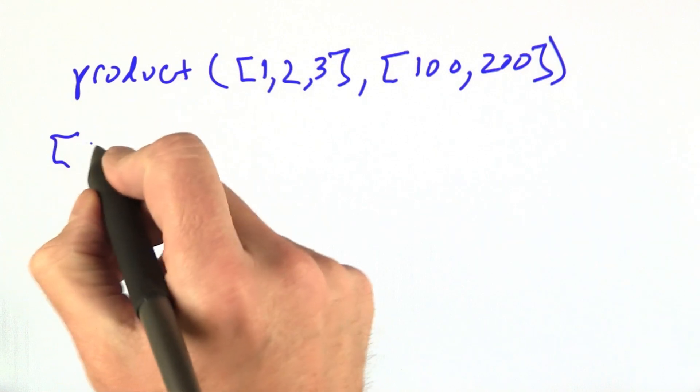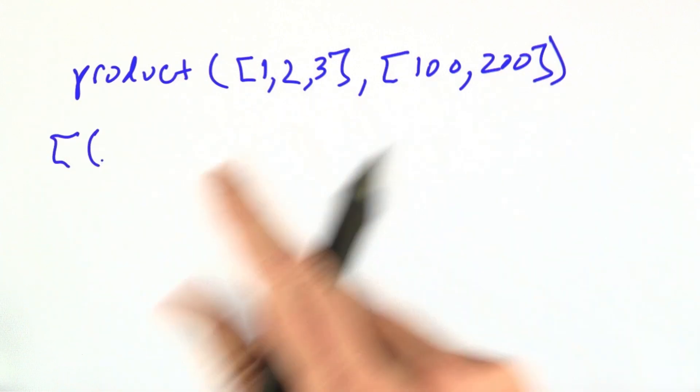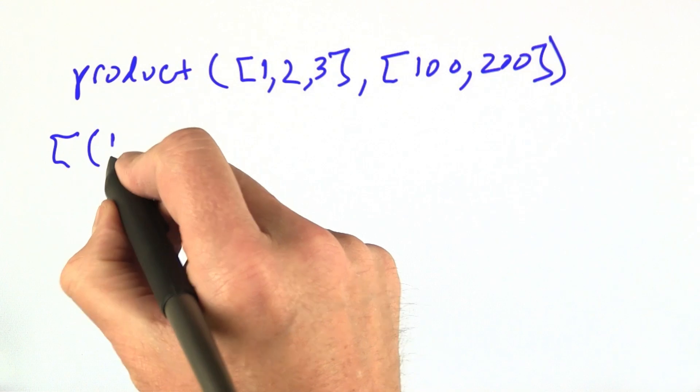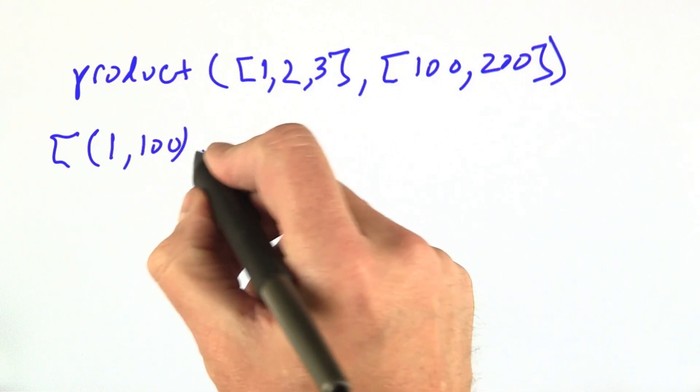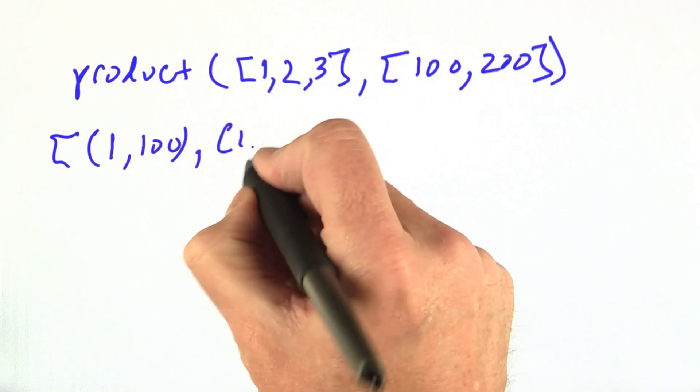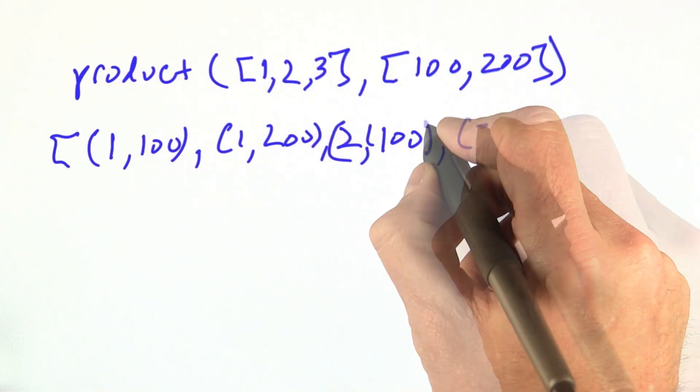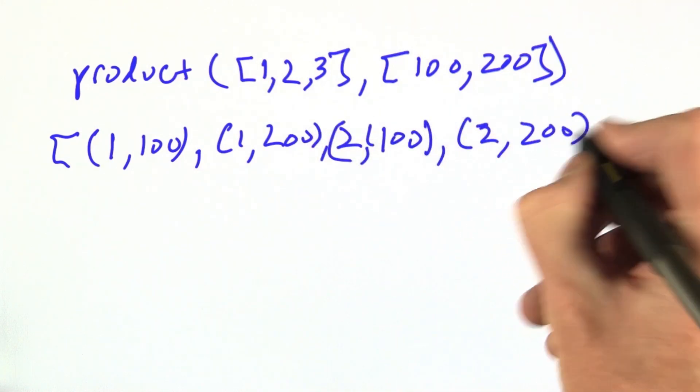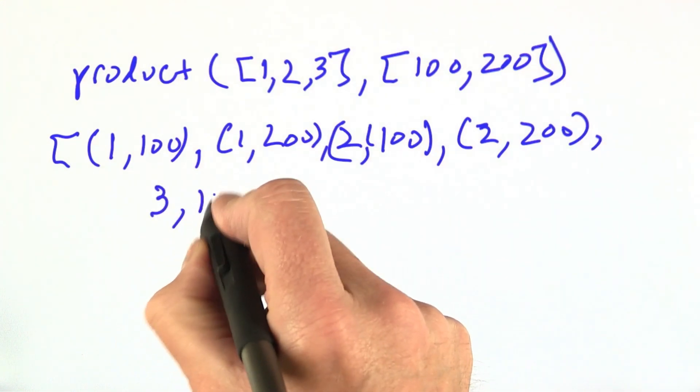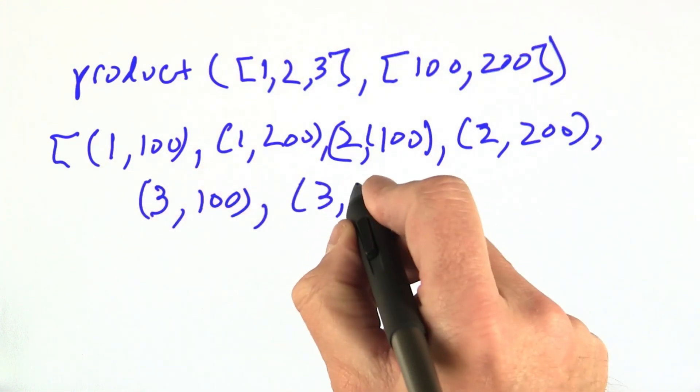That would return a list. The pairs of items are put into tuples. It would be (1, 100), (1, 200), (2, 100), (2, 200), (3, 100), (3, 200).